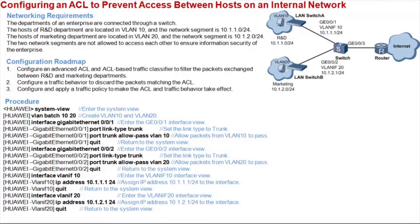The configuration roadmap is as follows. Configure an advanced ACL and ACL-based traffic classifier to filter the packets exchanged between the R&D and marketing departments. Configure a traffic behavior to discard the packets matching the ACL. Configure and apply a traffic policy to make the ACL and traffic behavior take effect.